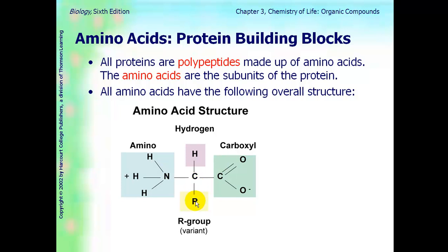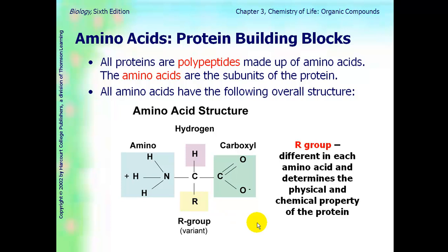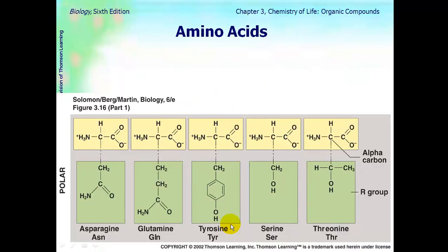And then, the last bond is an R group, and an R group is any variant. Any kind of molecule can exist there, as simple as a hydrogen, or it could be a big, long hydrocarbon. The amino acids are all the same except for that R group. The R group is different in each amino acid, and that is what's determining what type of protein it is, the physical and chemical properties of it.